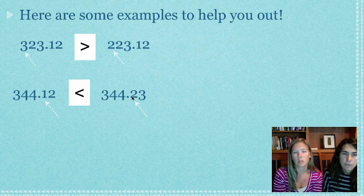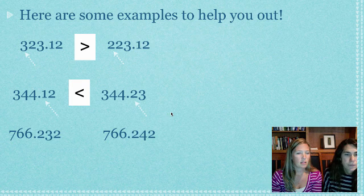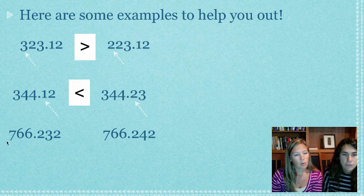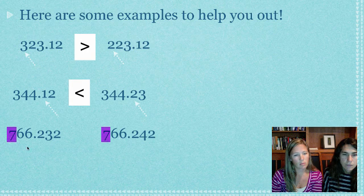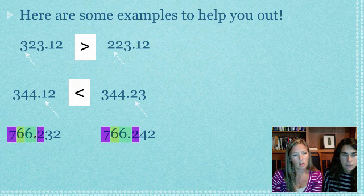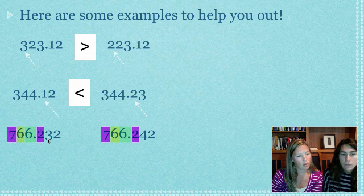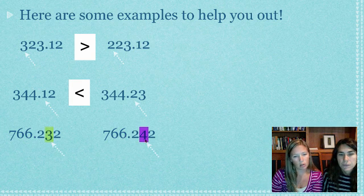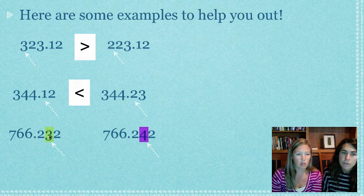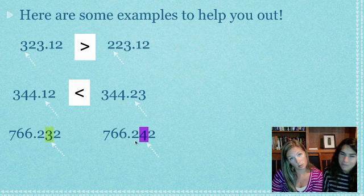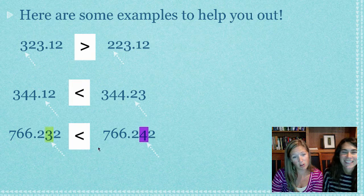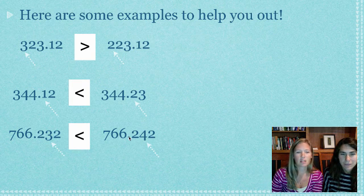Again, these ones are identical until you get there, so you just look at the part where it becomes something different. And then the last example we have, again we're looking at them. The sevens, we start at the hundreds are the same, the sixes are the same, so we just keep moving over. Six is the same, decimal, two, two, and then once we get into the hundredths place, we have a three here and a four here. Which one of those is bigger, a three or a four? Four is bigger than three. So 766.242 is larger.